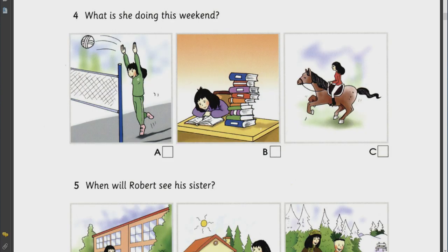Four. What is she doing this weekend? So, what does your sister do at the weekend? She usually has a lot of homework. So, she's got to study. She doesn't do that every weekend, does she? No. Last weekend, she was in a volleyball competition. This weekend, she's going horse riding. Excellent.